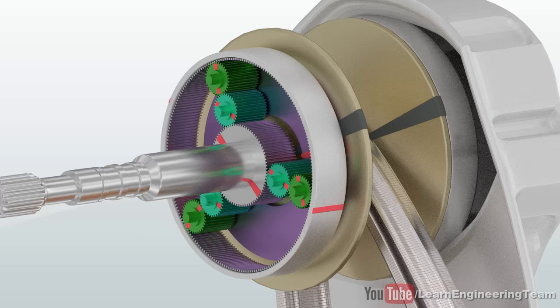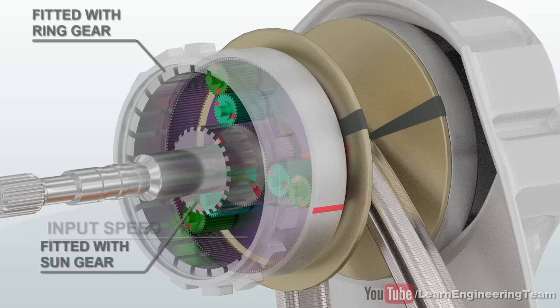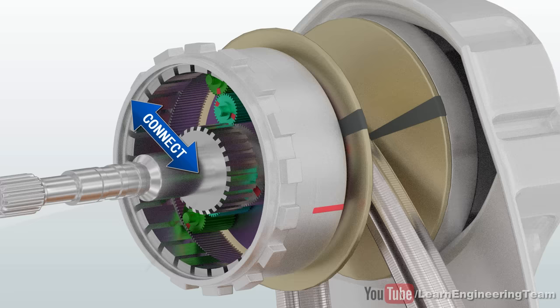If the ring gear also turned at the input speed, the carrier will rotate at the input speed as well. This is possible just by connecting the sun gear with the ring gear.